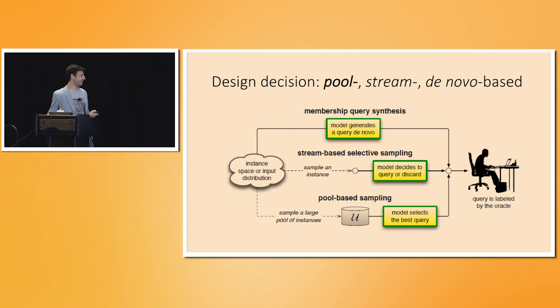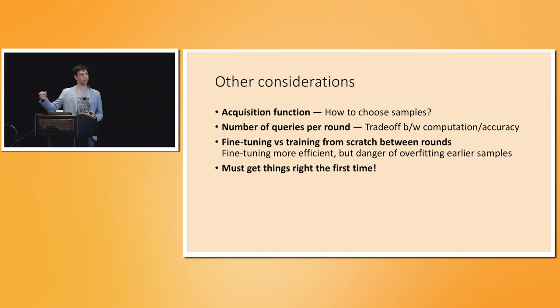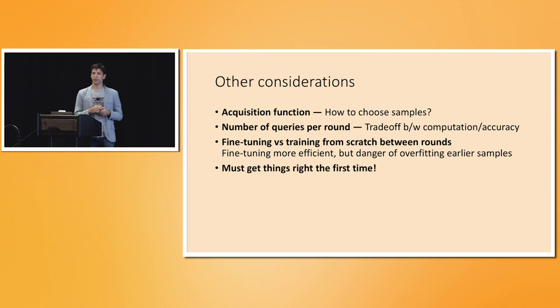The things to consider with active learning are acquisition functions — how we score examples at each round of training to decide which to query. We also have the question of the number of queries per round. In the most naive conception you send one example at a time, but practically if you're training a deep vision model you need to batch queries — say 1,000 examples per round — giving you 10 rounds for 10,000 labels.